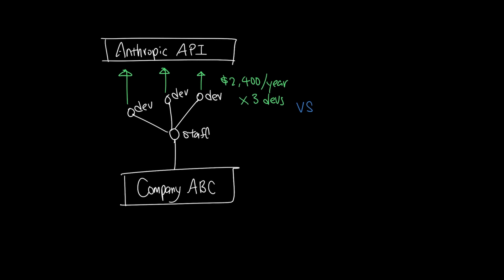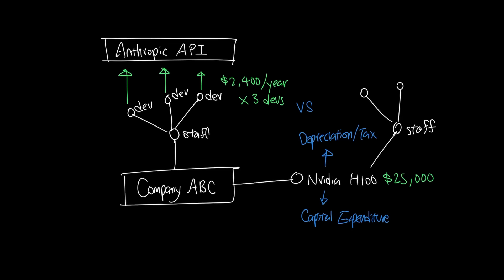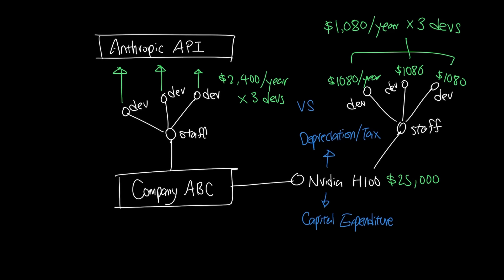The $25,000 hardware that a company purchased could be considered as an initial investment that you pay upfront as a capital expenditure and can be depreciated in taxes. And on top of that, the following year will only cost $1,080 per year in electricity costs for inference, which is far less than the $2,400 and potentially less if the same equipment is shared between two developers.